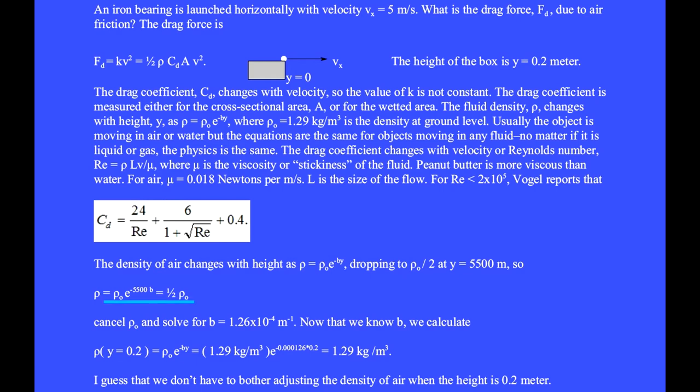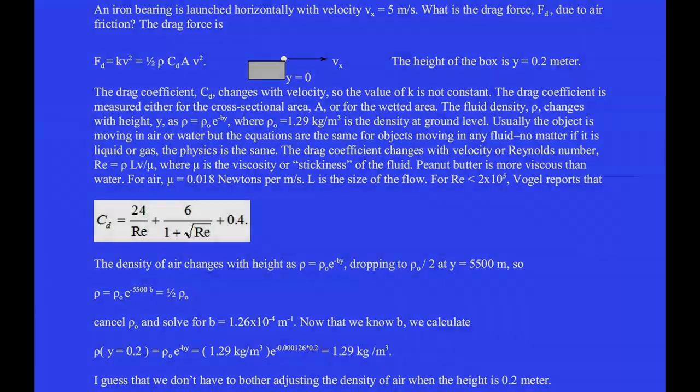So the density rho at 5500 meters is rho 0 e to the minus 5500 b and that's one half rho 0. Cancel rho 0 and solve for b equals 1.26 times 10 to the minus 4 per meter. Now that we know b, we calculate the density at a height of y equals 0.2 meters and we get 1.29 kilograms per cubic meter which is what we had to begin with. So I guess we don't have to bother adjusting the density of air when the height is 0.2 meters.